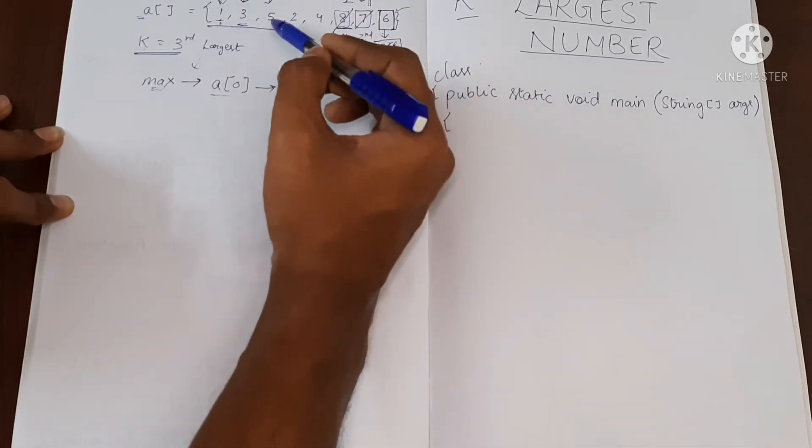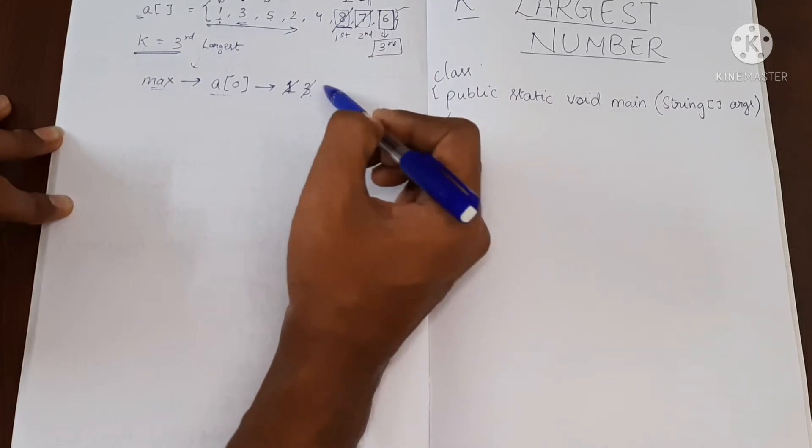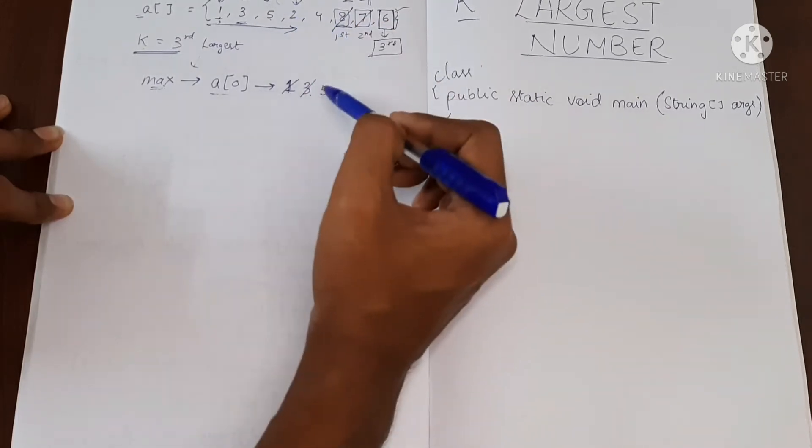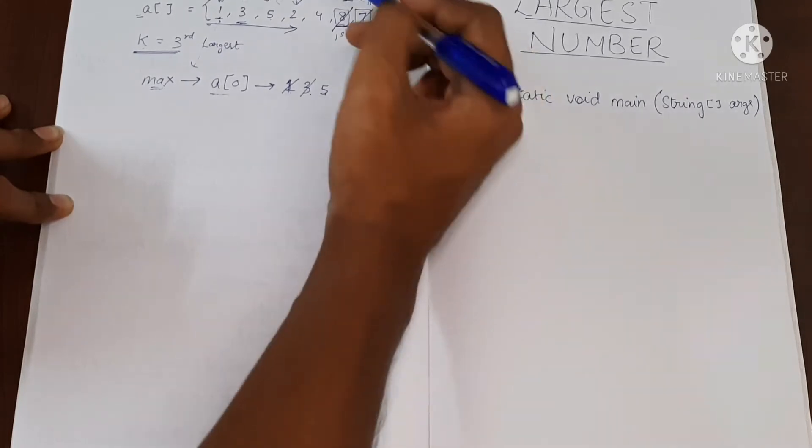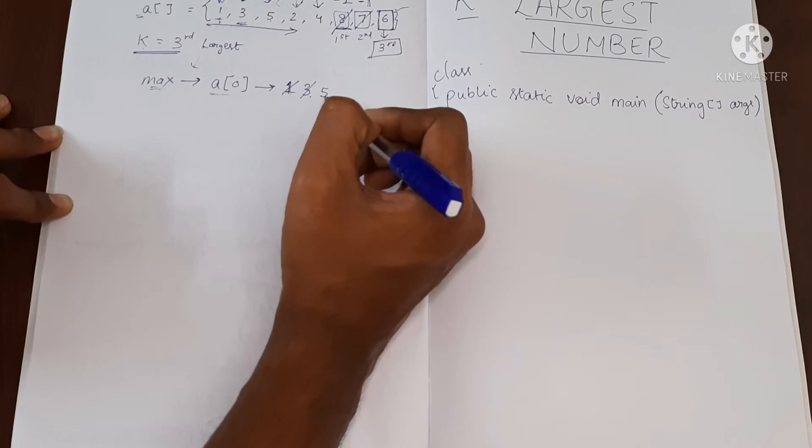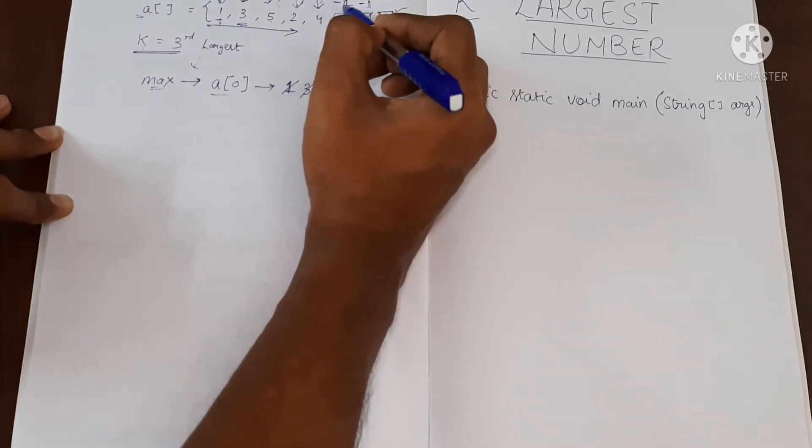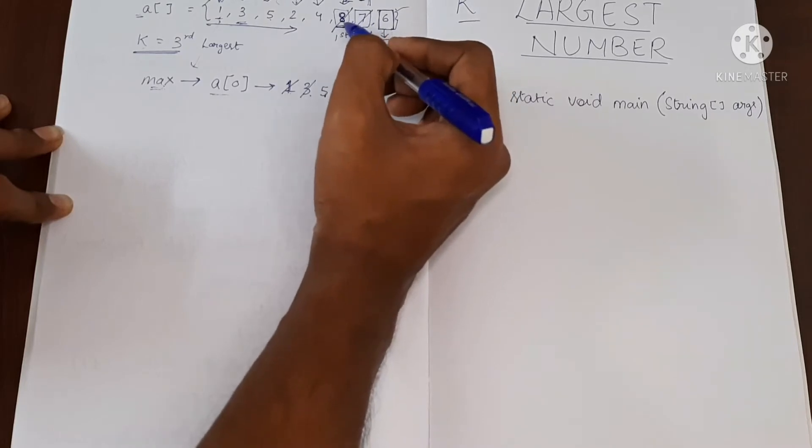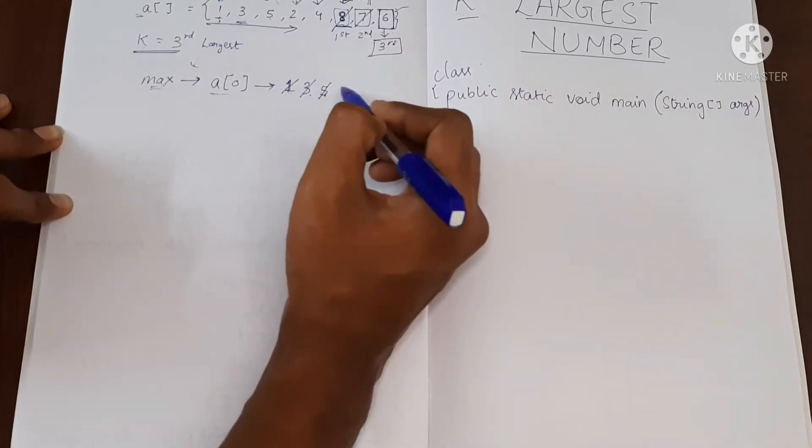I'll move to the next element. This is 5. 5 is greater than 3, I'll make it as 5. I'll go here. Now 2 is less than 5 so I will not do anything. I'll move to the next element. Now 4 is again smaller than 5. Then I'll move to the next element and initially here it was 8, so I'll modify it and make it 8.